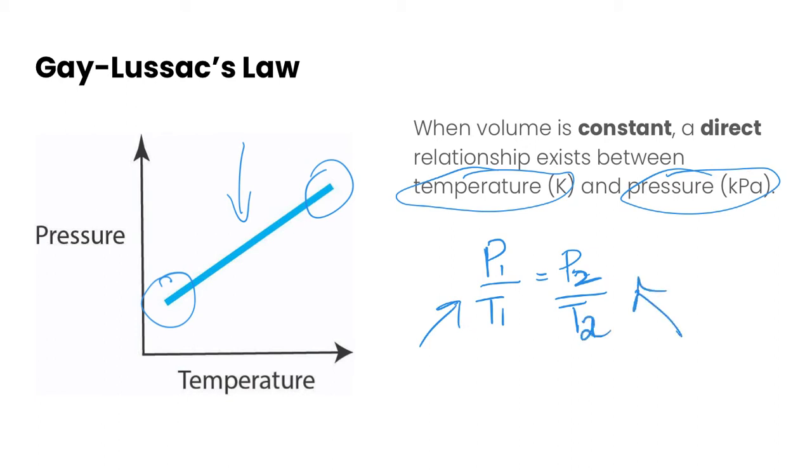T2 would be final conditions. And so we can manipulate this equation to solve for questions and scenarios where we have a constant volume of gas and we have different temperatures and pressures.